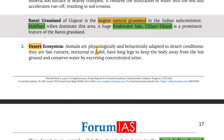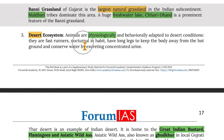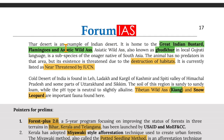Moving on to desert ecosystems, animals are physiologically and behaviourally adapted to desert conditions. They are fast runners, nocturnal, have long legs to keep the body away from the hot ground, and conserve water by excreting concentrated urine. The Thar Desert is an example of an Indian desert. It is home to the Great Indian Bustard, flamingos, and Asiatic wild ass. The Asiatic wild ass, also known as Ghudkhar in local Gujarati language, is a subspecies of Onager native to South Asia. It has no predator in the area but is threatened by habitat destruction and is currently listed as Near Threatened by IUCN.